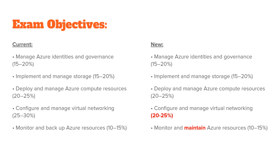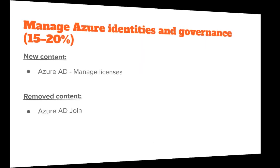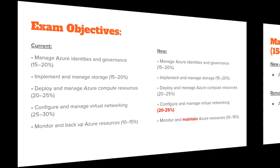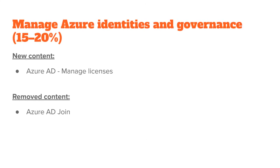When we get down to the virtual networking objective, the percentage of the exam covering virtual networking is actually lower — at 20 to 25% instead of 25 to 30%. One section has been removed from this section of the exam, and they've changed the word 'backup' to 'maintain' in the last objective. Now I'll go through each of these sections. There are five major objectives and I'll go through all five.